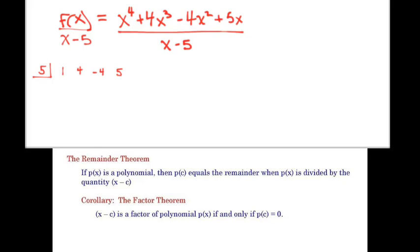where we take the coefficients in front, so 1, 4, negative 4, 5, and then we have to add 0, right? This is really a 0 at the end here. That's going to be our placeholder. And then we bring down the 1, and then we multiply and add. 5 times 1 is 5, and I get 9, 41, 205, 210, and then 1050. So that's my remainder.